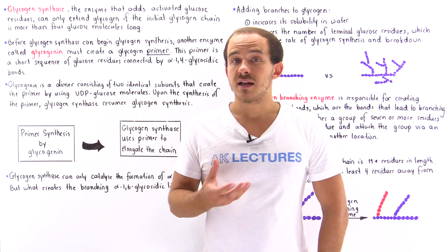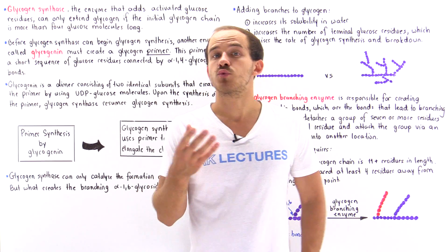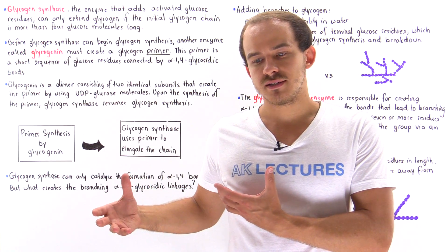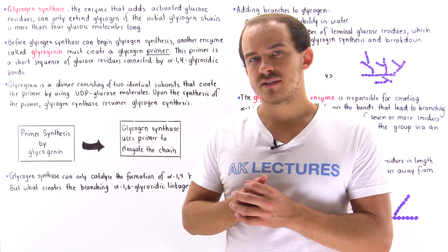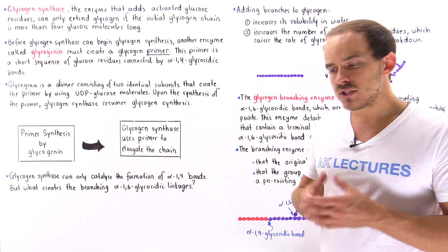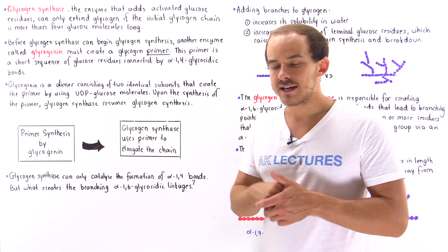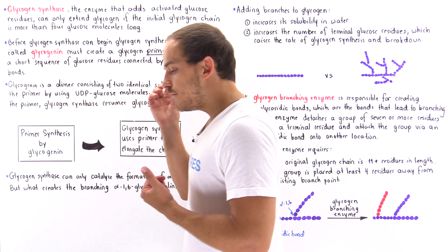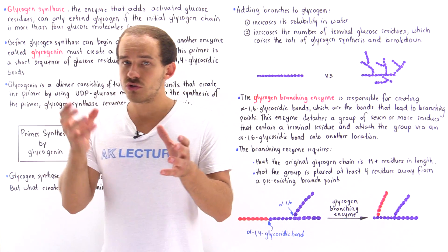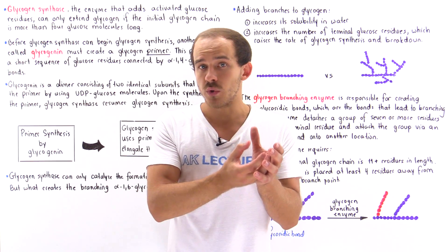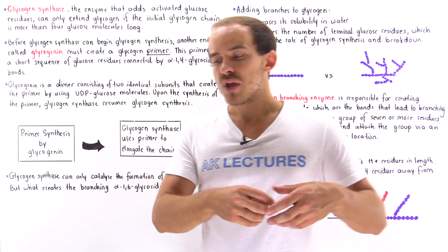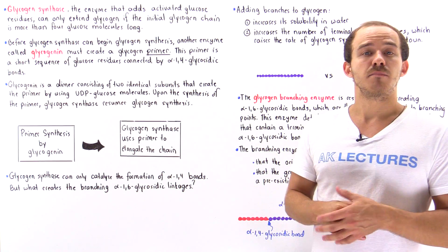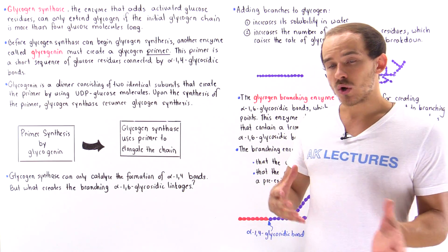The process by which our cells build glycogen molecules is relatively complicated and actually consists of many individual processes. All these processes basically work together to ultimately synthesize that glycogen molecule. As we discussed in the previous lecture, before we can actually attach a glucose molecule onto a growing polysaccharide chain, we have to activate that glucose molecule — we have to make it much more reactive.